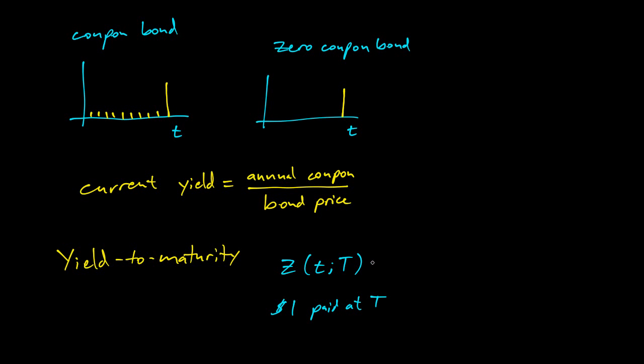Then the formula, this is an interest rate calculation. We've done this. It'll be e to the negative Y times T minus T for some Y. And that Y, that's exactly the yield to maturity, YTM.